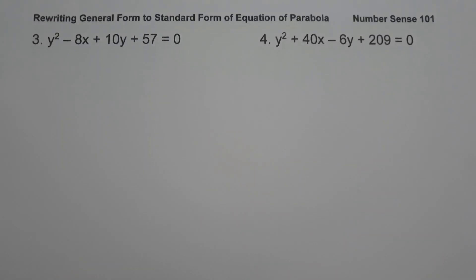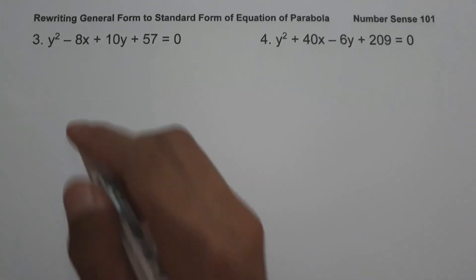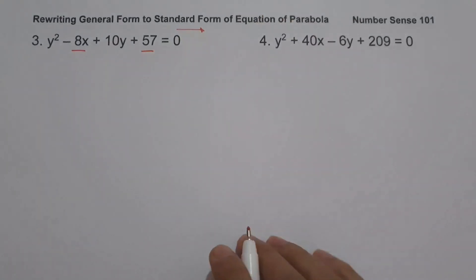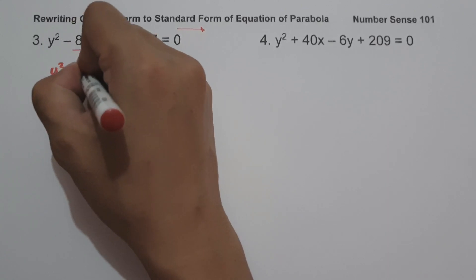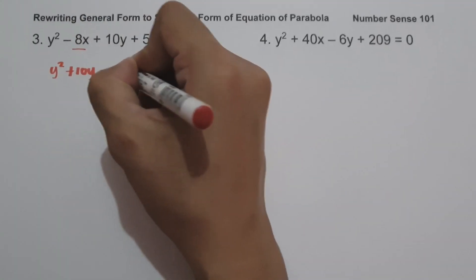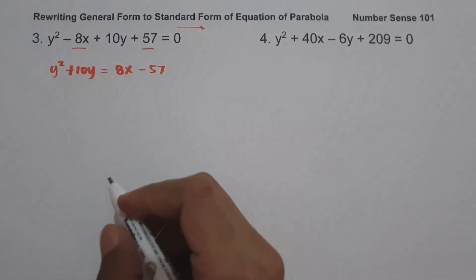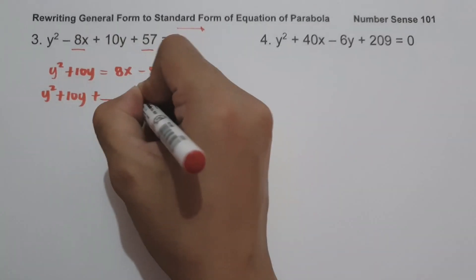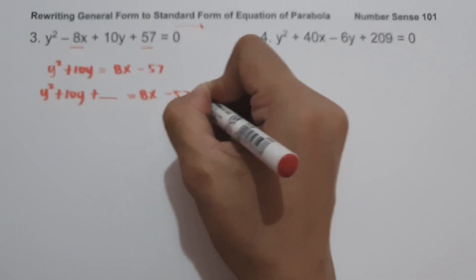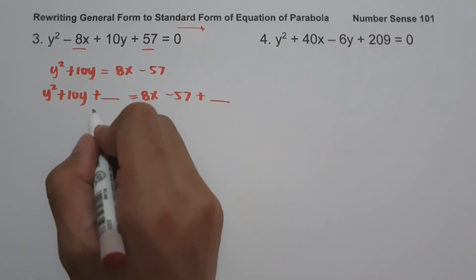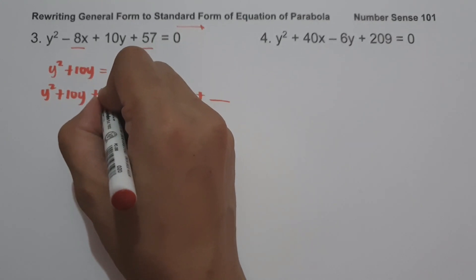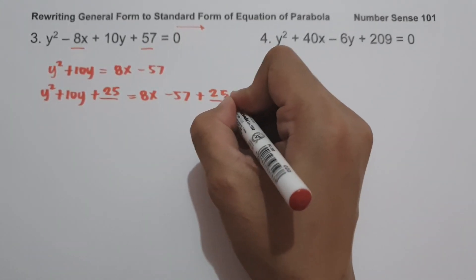Example number 3: we have y² - 8x + 10y + 57 = 0. To write the equation in standard form, let us move -8x and 57 to the other side. So we have y² + 10y = 8x - 57. Performing completing the square: y² + 10y + ___ = 8x - 57 + ___. We take 10 ÷ 2 = 5; 5² = 25. Add 25 to both sides.